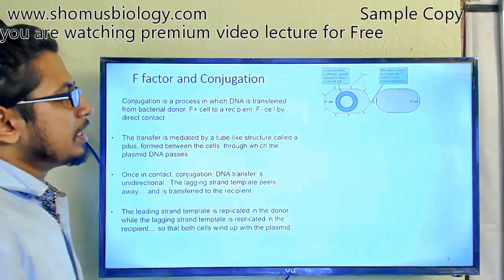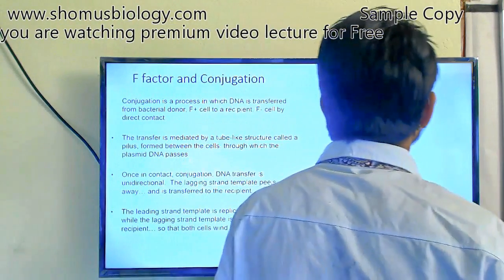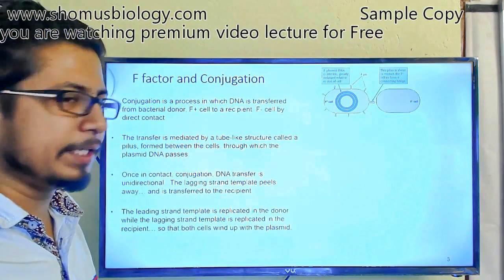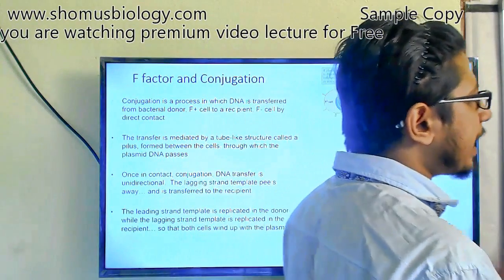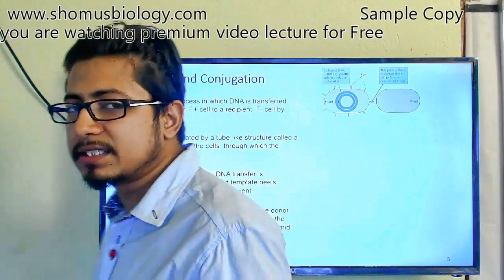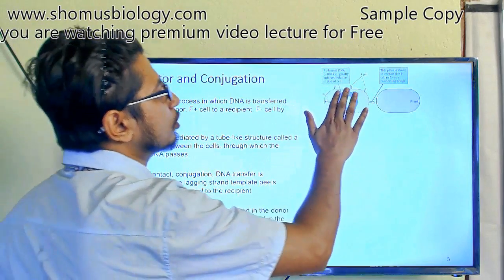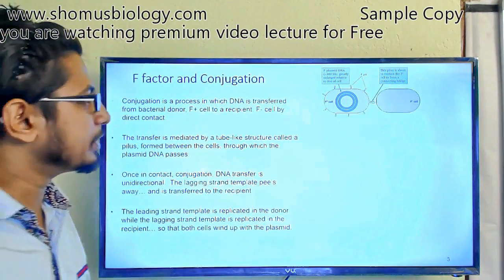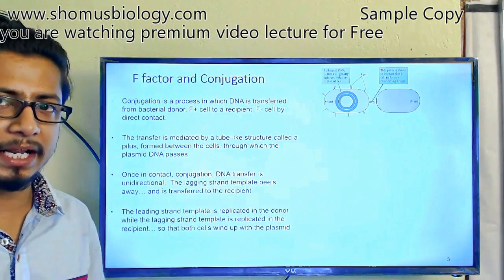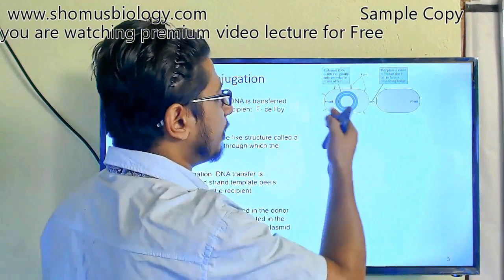There are different types of cells: F+ cells and F- cells. An F+ cell carries a plasmid known as the F plasmid, also called the fertility plasmid. The F+ cell acts as the donor because it donates genetic components to the recipient. The F- cell lacks the F plasmid and acts as the recipient. So F- is the recipient and F+ is the donor.